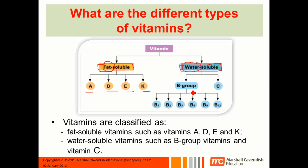Under water soluble you have the B group, which is split into six: B1, B2, B3, B6, B9, and B12, and also vitamin C.